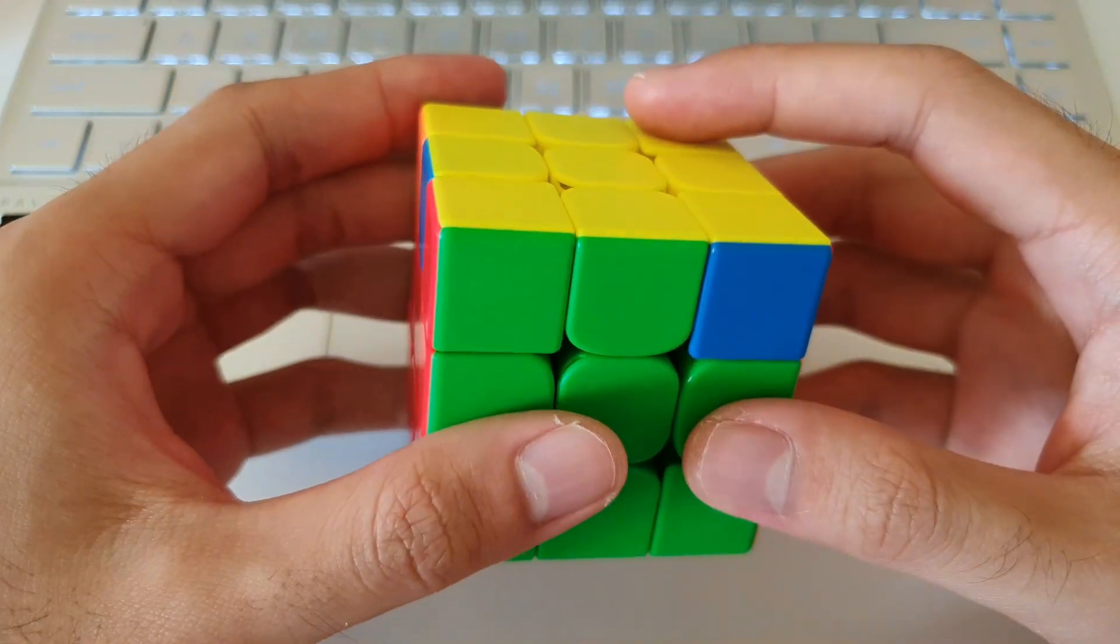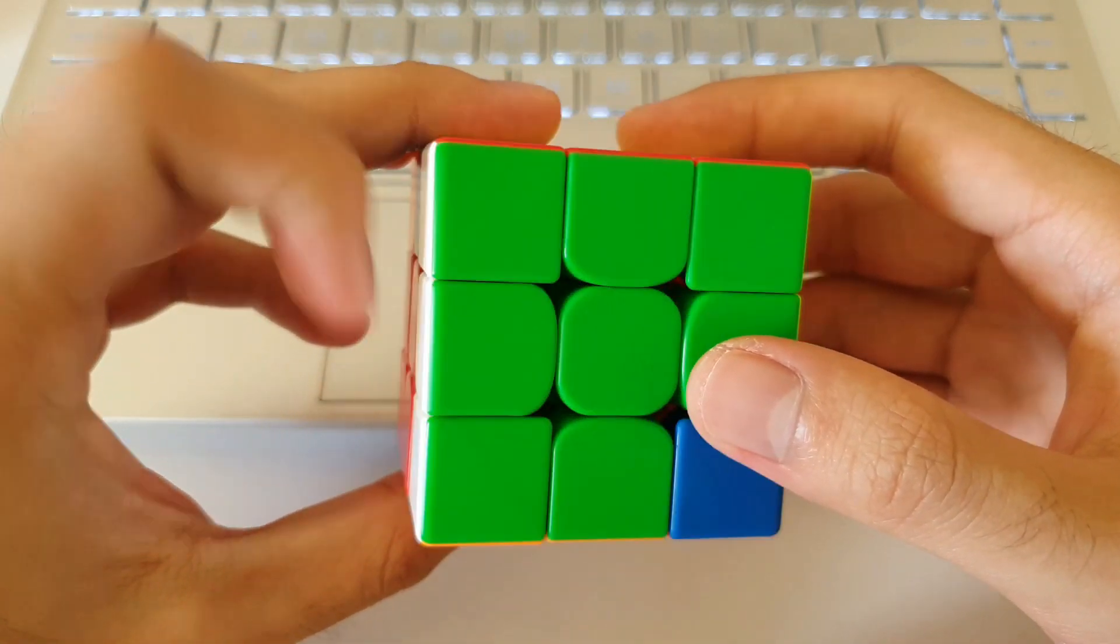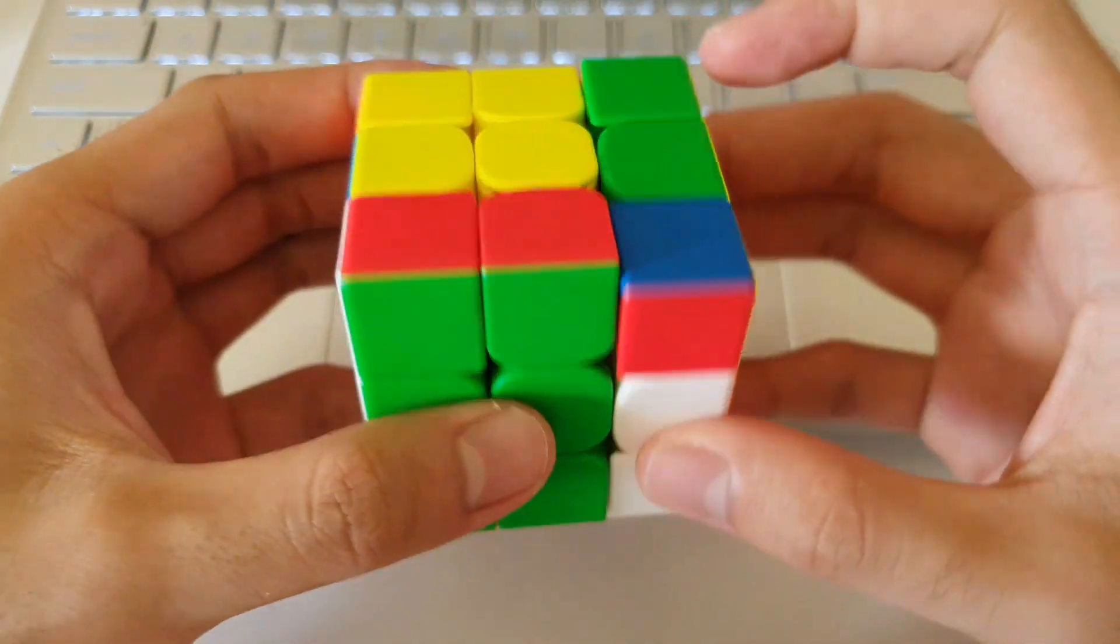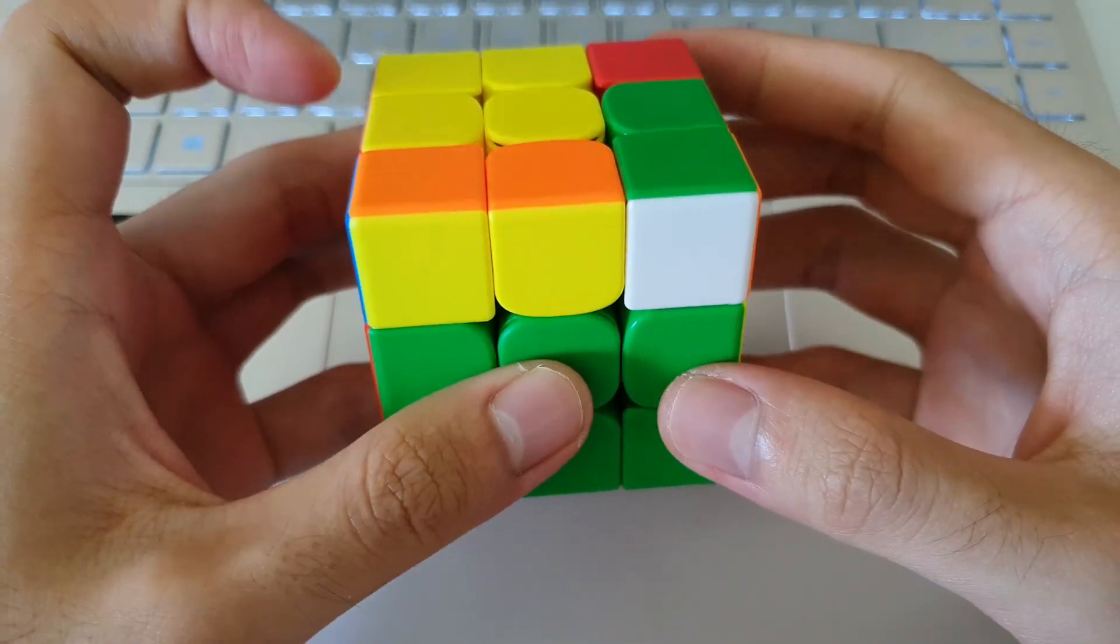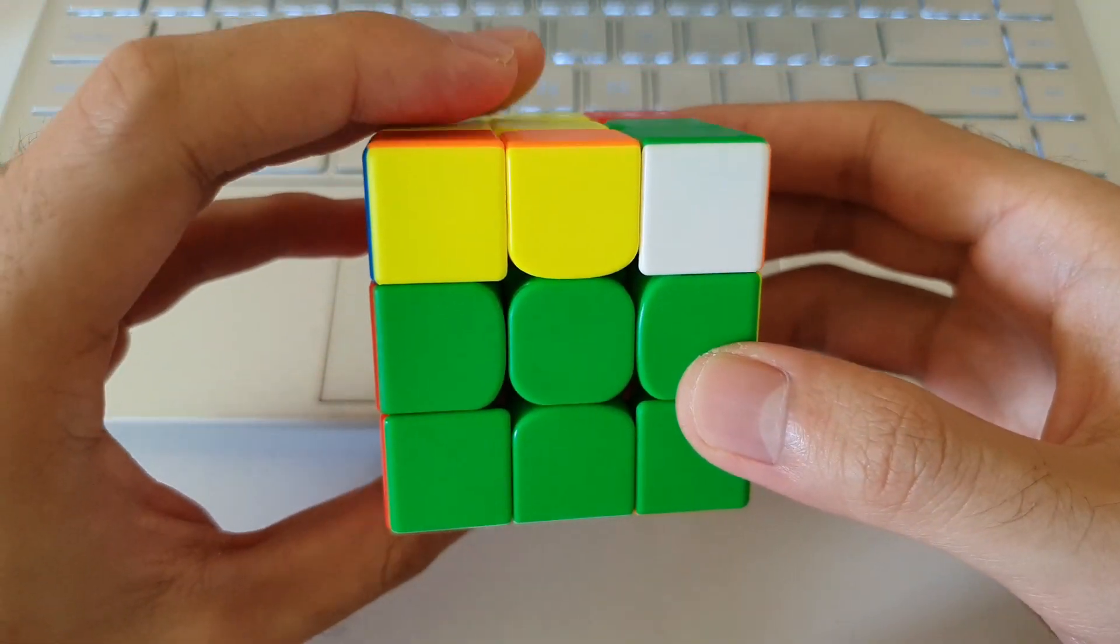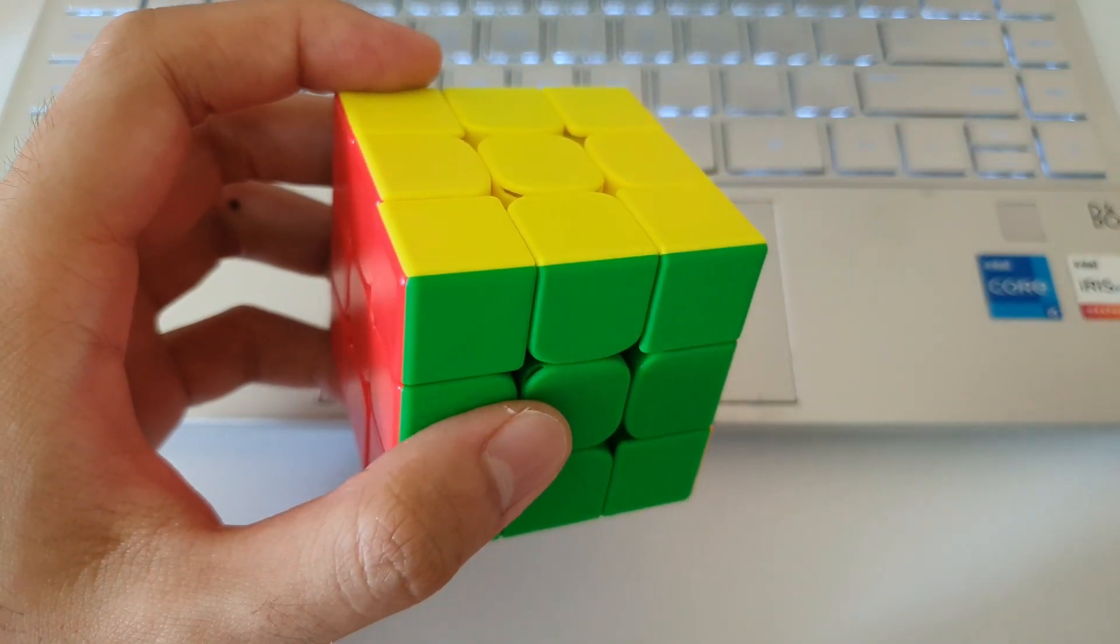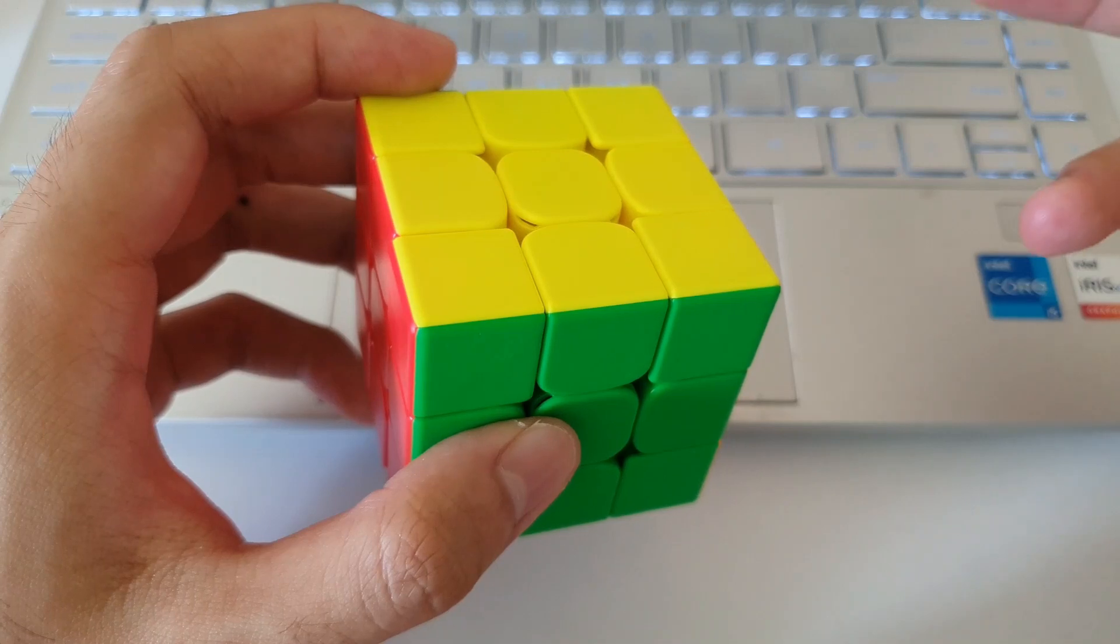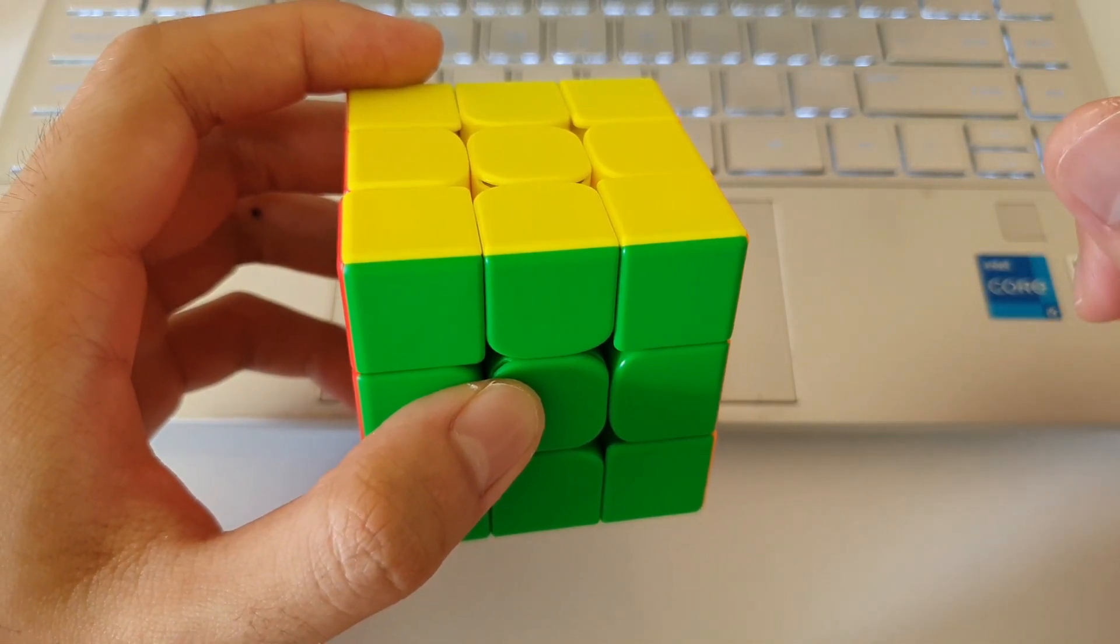But instead if I decided to have used my left index finger to do the F' move like this, which I have seen some people do, you'll notice that when I get to the end of the algorithm, I'll have to re-grip my left hand before I do the Sledgehammer, and that re-grip before the Sledgehammer, will definitely slow the algorithm down. You won't be able to do it as quickly as if you didn't re-grip and just did that F' finger trick instead.